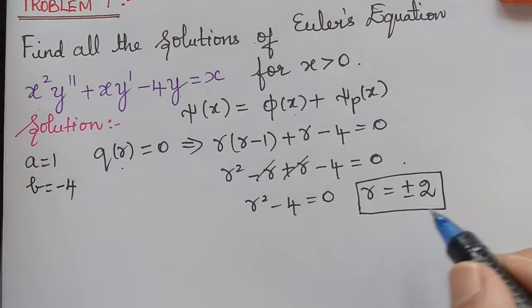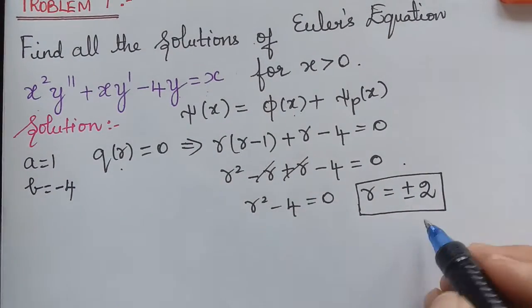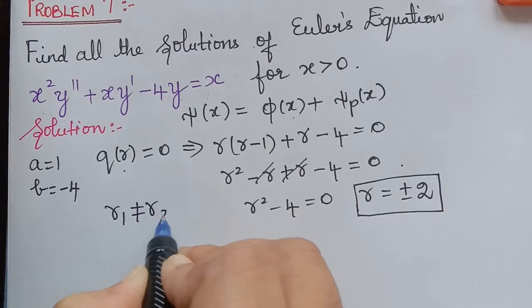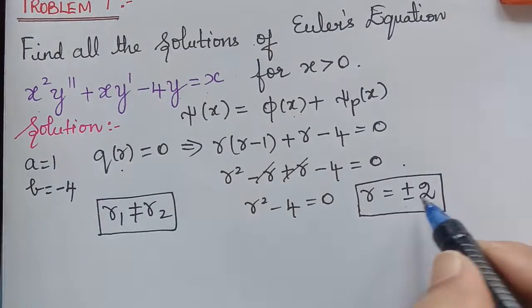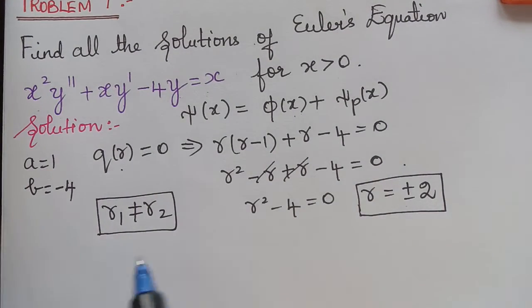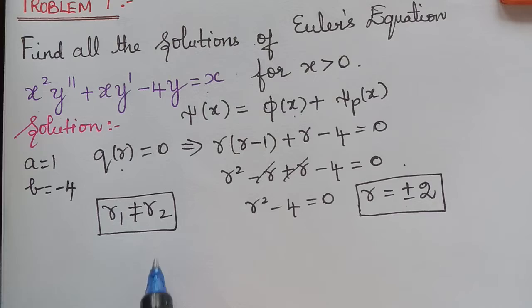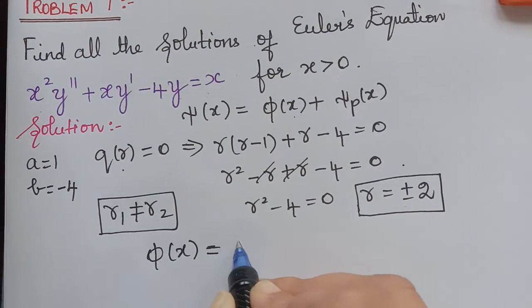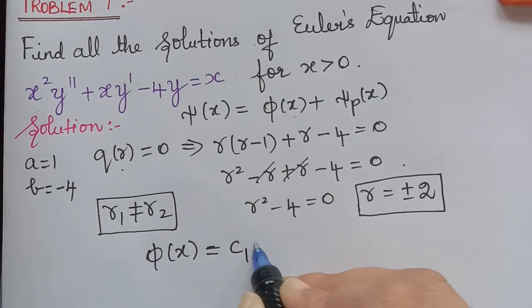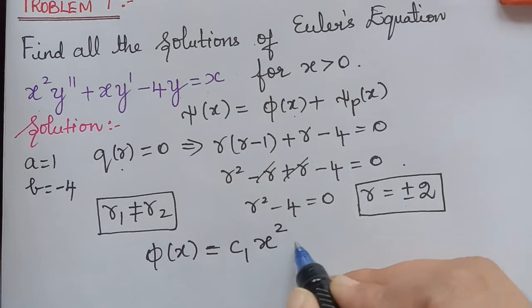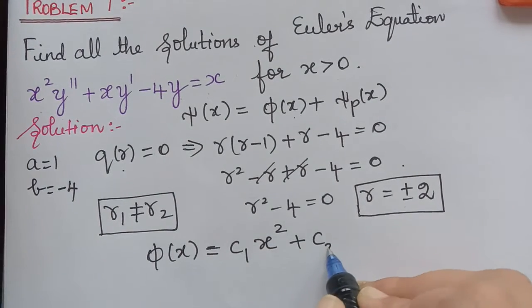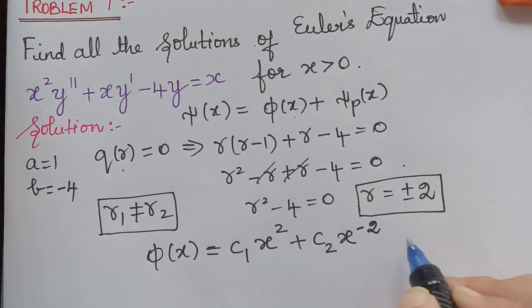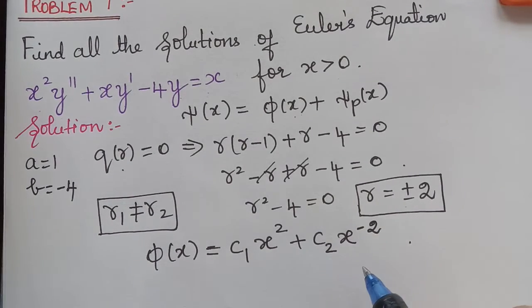We observe that r₁ is not equal to r₂, since the roots are +2 and -2 — two distinct roots. When the roots are distinct, the solution φ(x) equals c₁ x to the power r₁ plus c₂ x to the power r₂, giving φ(x) = c₁ x squared plus c₂ x to the power negative 2.